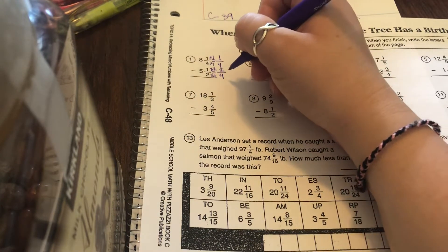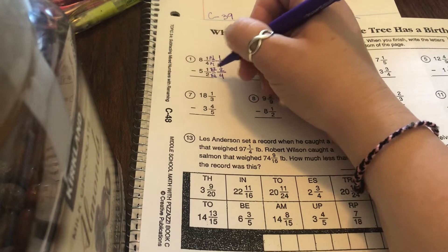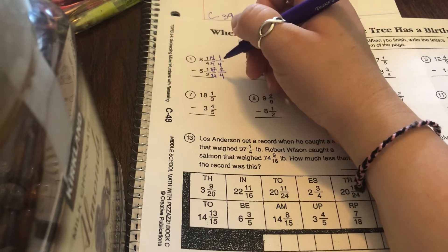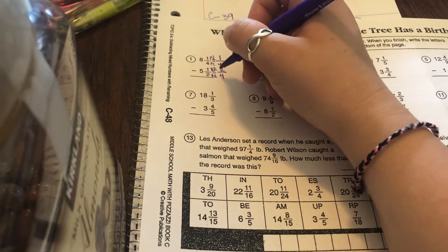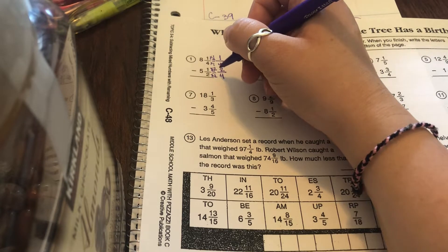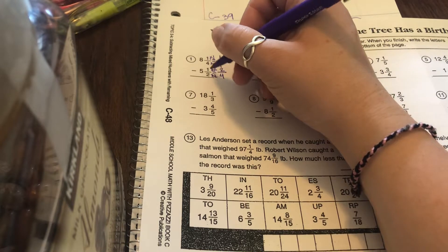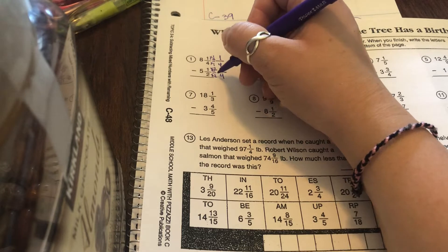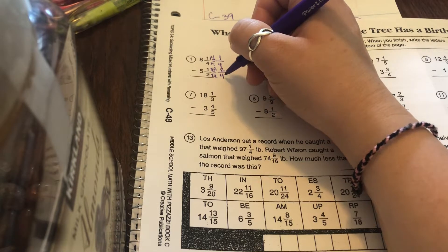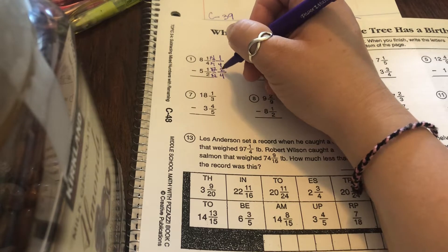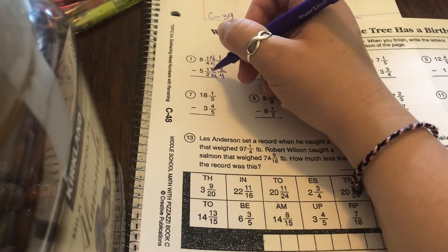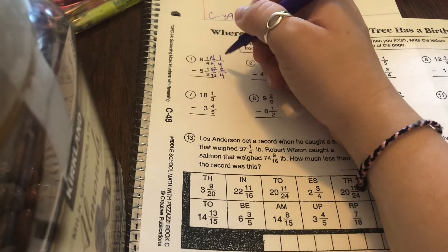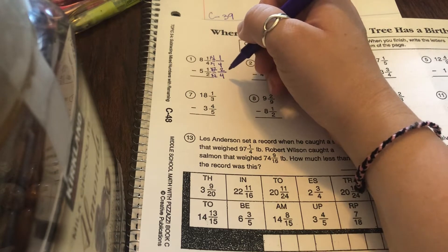I was able to do that because 2 fourths is equivalent to 1 half. The reason that works is because we multiplied essentially by 1. Any number over itself is 1, and any number times 1 is its same number. It didn't lose its sense of self. We just renamed it. So 2 fourths is a rename of 1 half. I did that so that now they have a common denominator, and I can move on to subtracting.